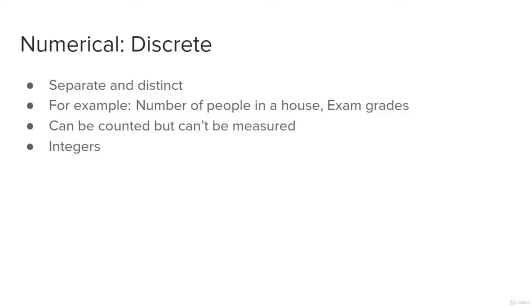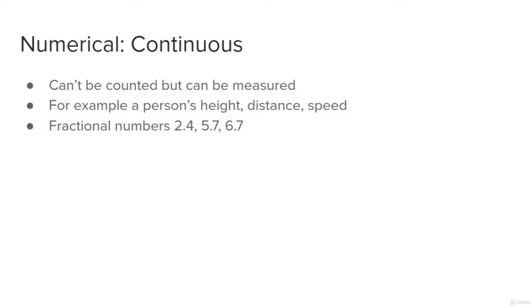Numerical discrete data is separate and distinct — values have no relation to each other. Examples include the number of people in a house or exam grades. These can be counted but cannot be measured, and in mathematics we represent them with integers. To identify discrete data, ask: can it be counted but not measured? Numerical continuous data is the opposite — it involves fractions like 2.4, 5.7, or 6.7. Quantities like height, distance, speed, and length can be measured but cannot be counted.